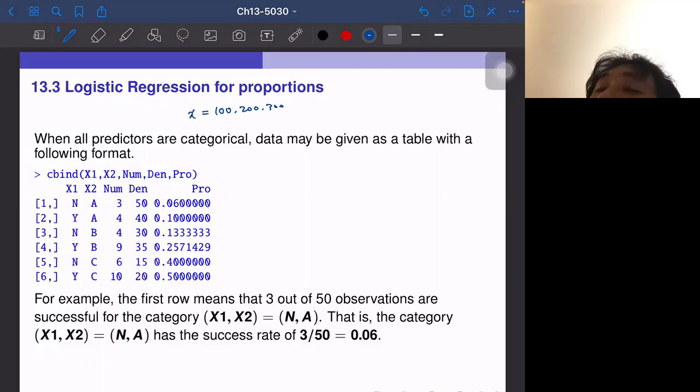Then the data may be given as a table with the following format. This is the typical format for the data for proportion. We have basically two predictors, X1 and X2. X1 has the value N or Y, and X2 has three possible values A, B, and C, both categorical.